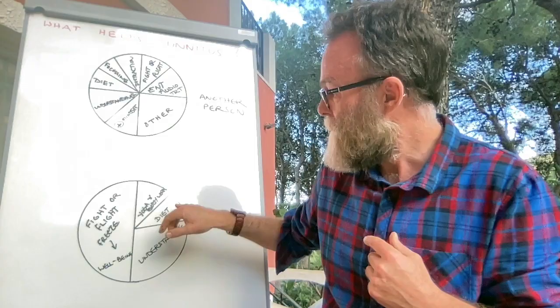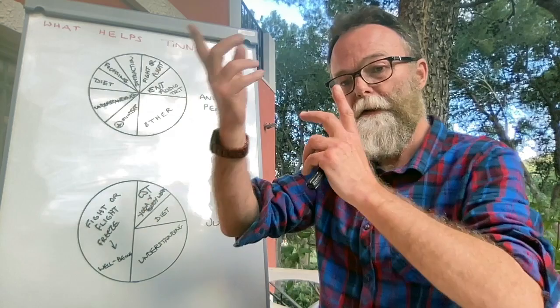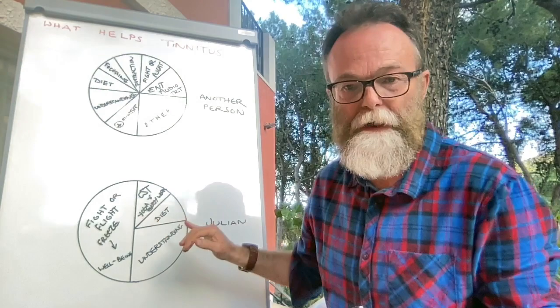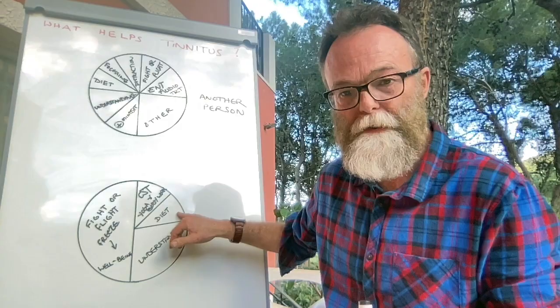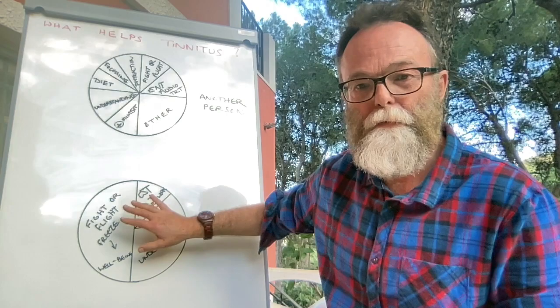Cranial sacral therapy, learning yoga, body work, tai chi—learning to shift my focus and calm the nervous system down helped me a lot. And also because I had issues with candida, a fungal infection in my blood called candidiasis, going on a diet really made a big difference to me too. This is Julian's pie chart.